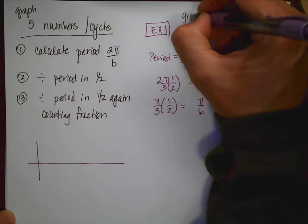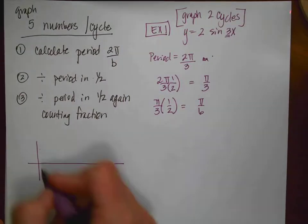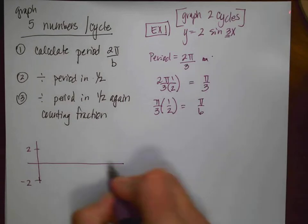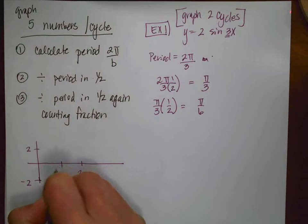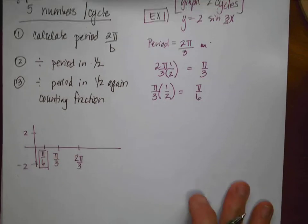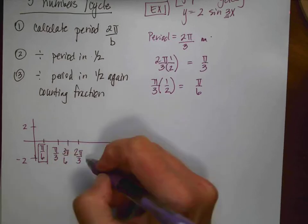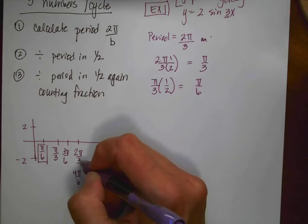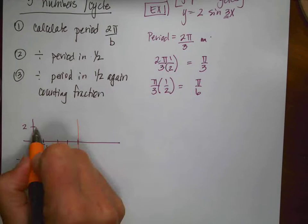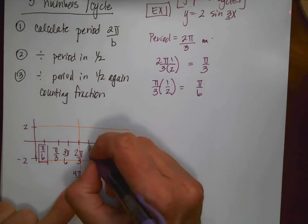Putting this on a graph — graphing two cycles — my amplitude is 2, so I mark 2 and -2. I plot the period at 2π/3, divide it in half to get π/3, and in half again to get π/6, the counting fraction. Counting by π/6: 1π/6, 2π/6, 3π/6, 4π/6 (which is 2π/3, the end of the first period). I draw a line to mark the end of that first period.